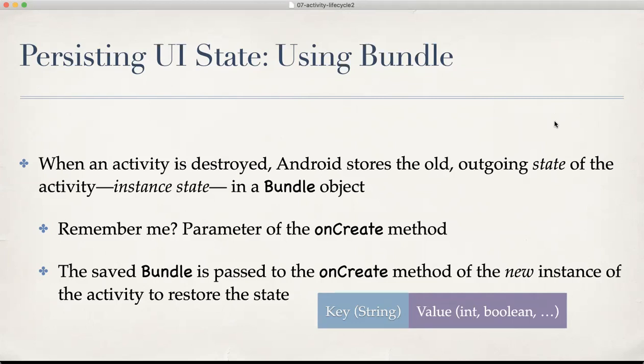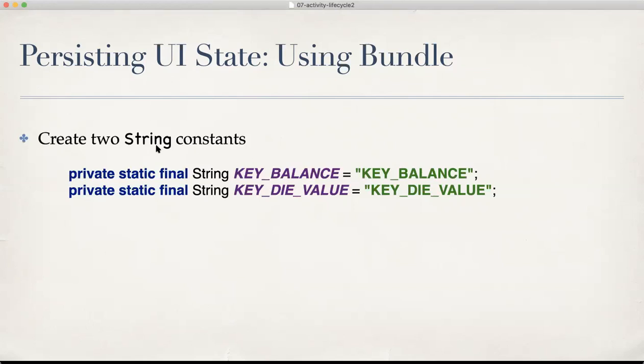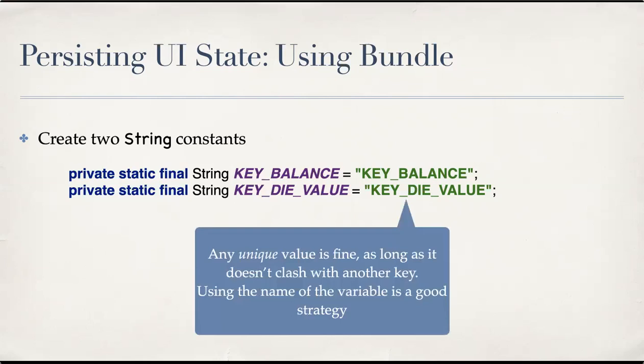So before getting that to work, we should create two strings as keys for the balance and the die value respectively. Create these two strings at the class level. They are constants, class level constants, because we want to save and restore them at different places. So put them right under your tag constant you have already created. The values of these strings could be anything as long as they are unique for that bundle, so they should not clash with any other key. Otherwise, you'll be getting unexpected data if you use the same key. And since you want them to be unique, using the variable name themselves is a good strategy because variable names won't clash, of course.